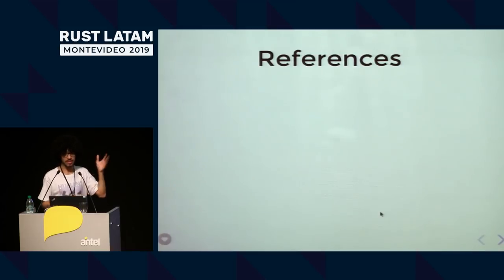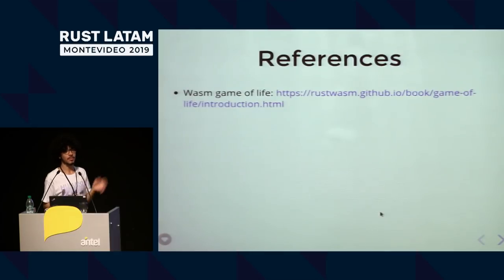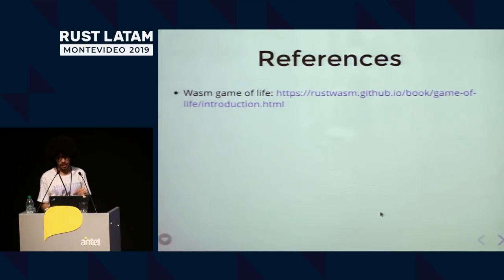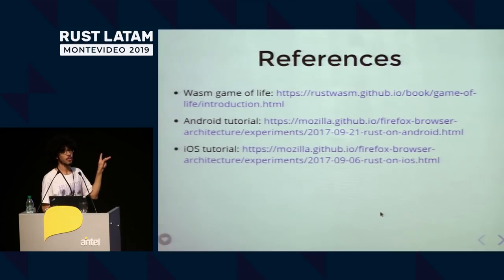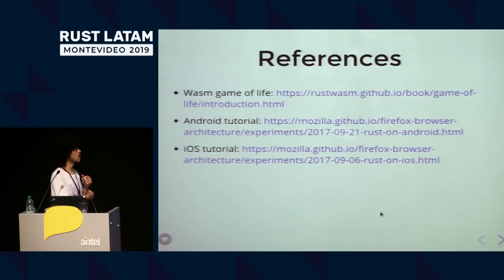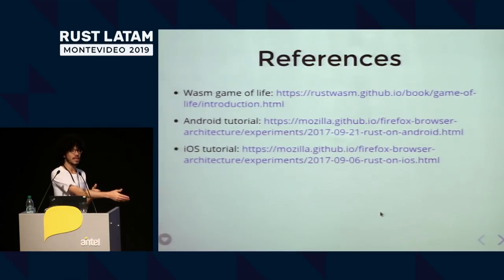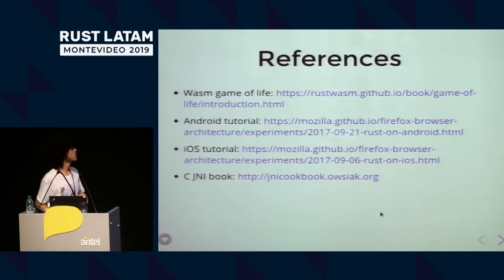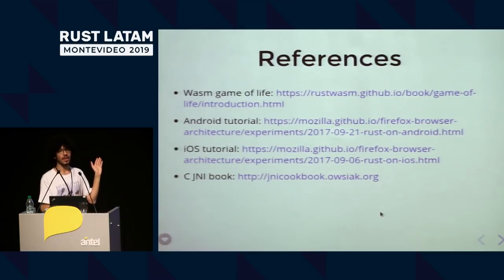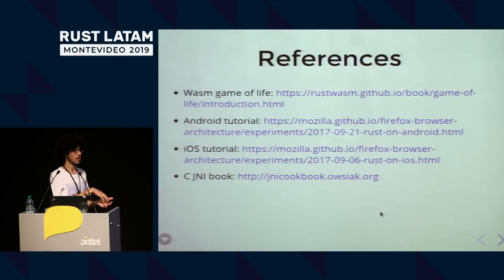Some references that helped me a lot. For WebAssembly, there's a book that creates Conway's Game of Life — I really recommend it, it gets kind of deep on WebAssembly. There are also Android and iOS tutorials by Mozilla that help with the linking process and how to build your library — they helped me a lot. It is a hello world, but it's what you need to start doing FFI with Android and iOS. For JNI, I didn't find many examples using Rust, so I found a book for C that was very helpful — some of the JNI interfaces in C are similar to the Rust ones.